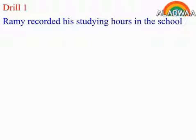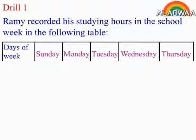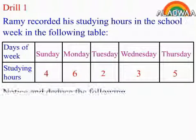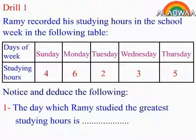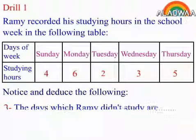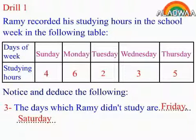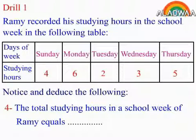Drill 1. Rami recorded his studying hours in the school week in the following table — Days of the week and Studying hours. Notice and deduce the following: 1. The day Rami studied the greatest hours is Monday. 2. The day Rami studied the least hours is Tuesday. 3. The days Rami didn't study are Friday and Saturday. 4. The total studying hours in the school week equals 20 hours.